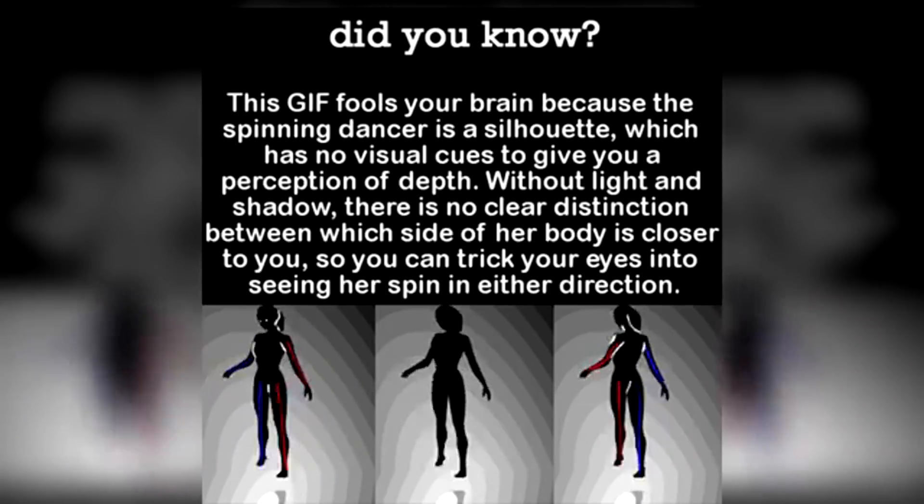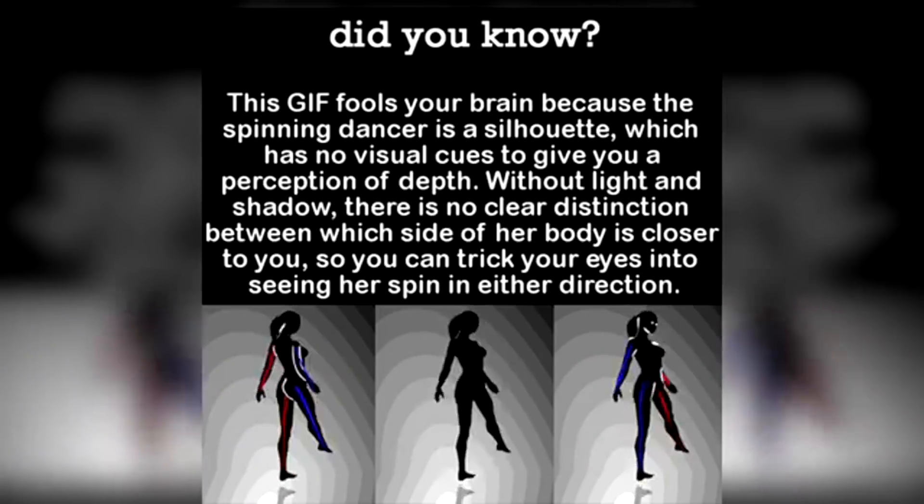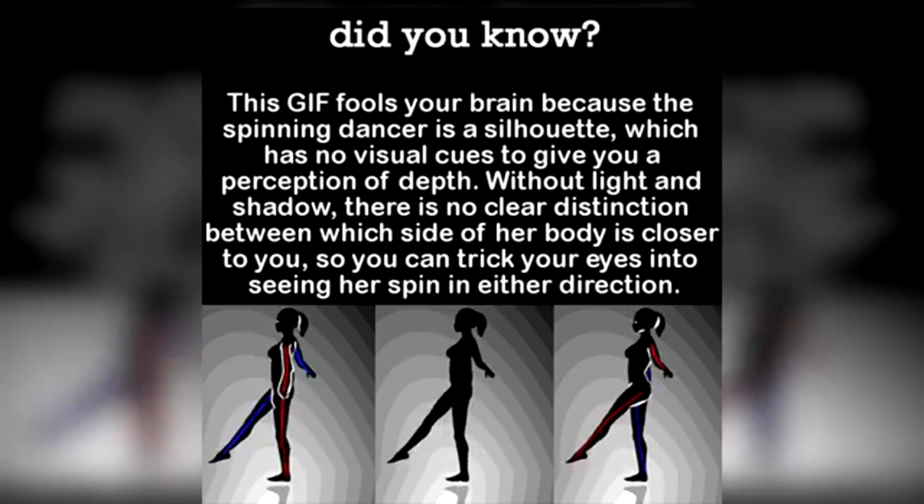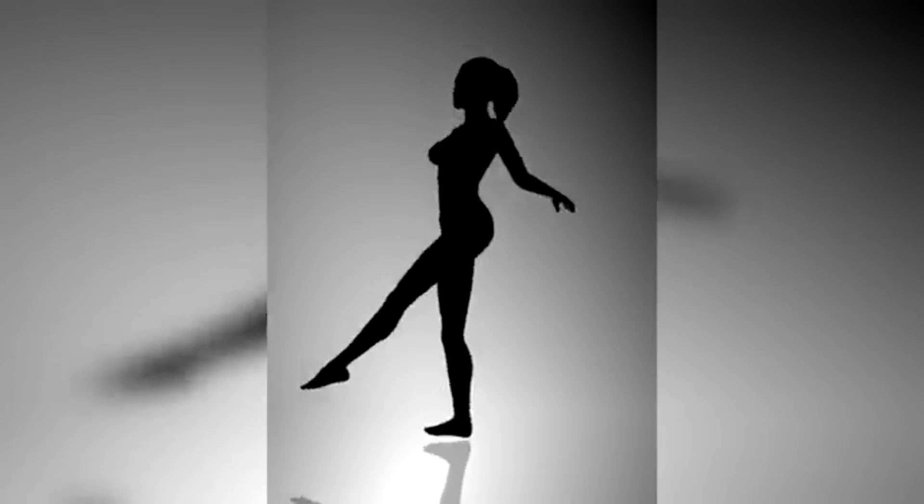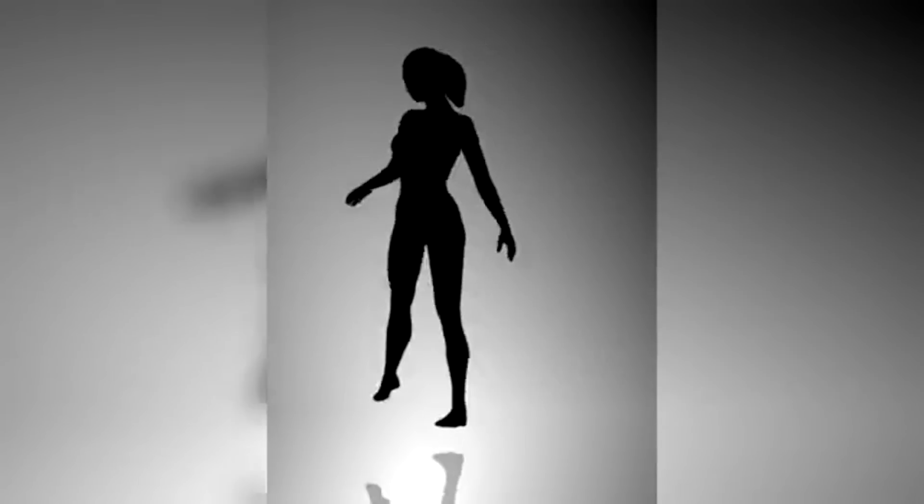The truth is, the ballerina is actually spinning both ways. This optical illusion actually allows us to trick our brains into changing the direction she's spinning. If we focus hard enough, we can make the ballerina spin whatever way we want. This one is a little hard, but try it out and see if you can make it happen.